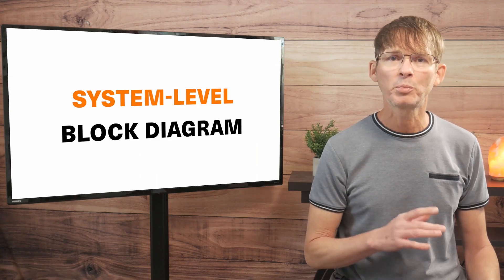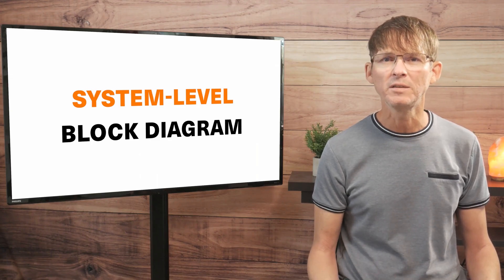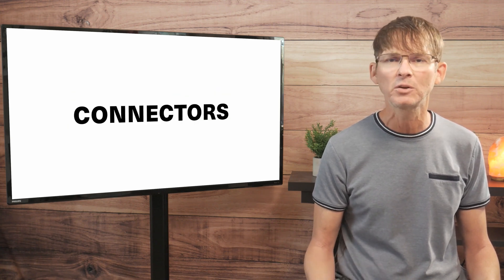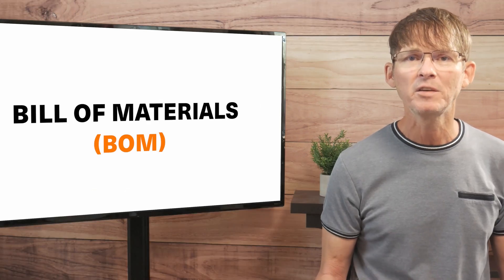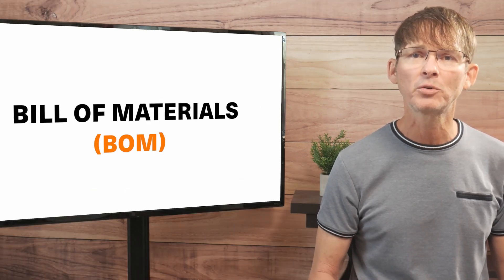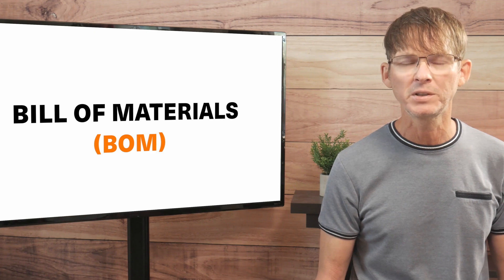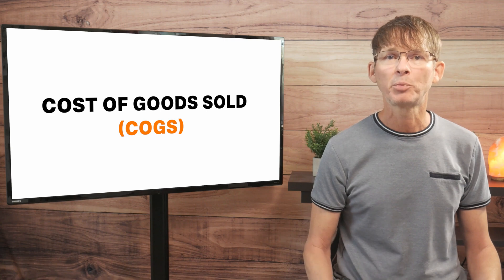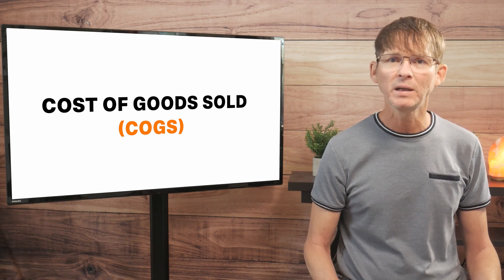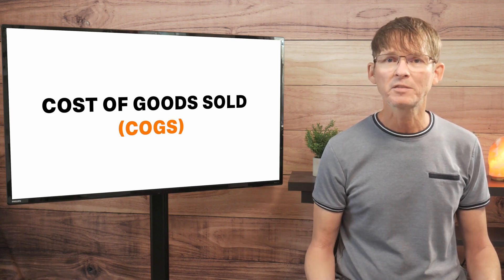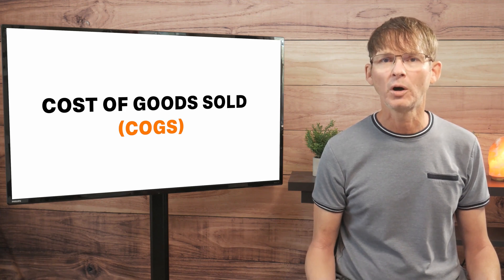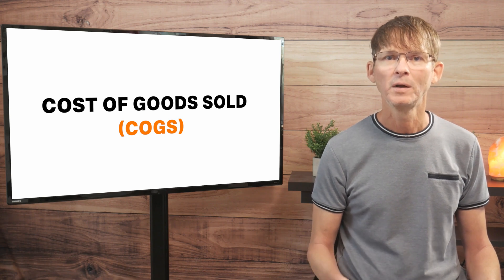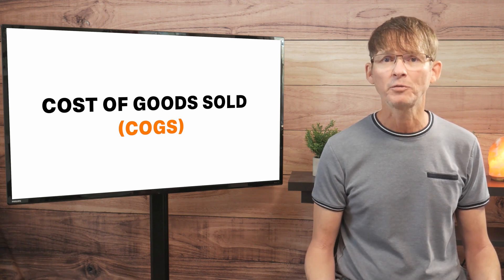Now it's time to select the various production components that you need, such as the specific microchips, sensors, displays, connectors, and so on. By selecting these now, this will allow you to create a preliminary bill of materials, or BOM for short. Once you have the preliminary production design completed, then you are ready to estimate the production cost, also called the cost of goods sold, or COGS for short.